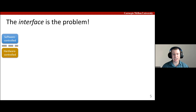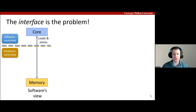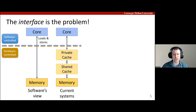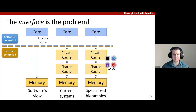Fundamentally, we realize that the problem is the memory interface, and it's the reason prior work was forced to use custom hardware. On current systems, software can only perform loads and stores, which was fine for older systems with direct memory access. But as we already saw, systems are now much more complex with distributed multi-level cache hierarchies, yet we still use the same load-store interface. Hence, prior designs were forced to add custom hardware within the hierarchy to optimize data movement because the memory interface gave them no other choice.